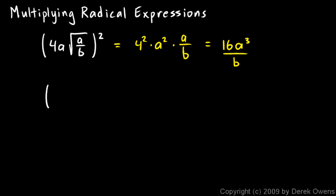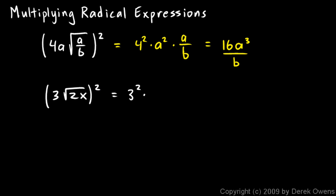The next example is also pretty easy — it's similar to that one. It's three times the square root of 2x, all squared. Think of this as two things inside the parentheses, two factors multiplied together: the 3 and the square root of 2x. Each of those two things gets squared. So I have 3 squared times the square root of 2x squared, which will just be 2x, because the square root and the square undo each other. So that becomes 9 times 2x, which is 18x.